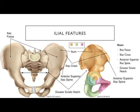The ilium is the more superior and lateral region of the os coxa. If you place your hands on top of your hips, you're touching the iliac crest — that's this top portion. The iliac crest is shown as this superior border of the ilium.